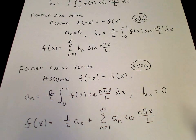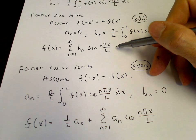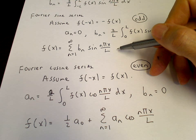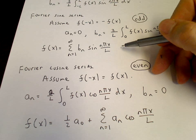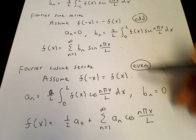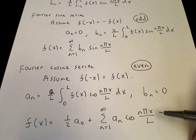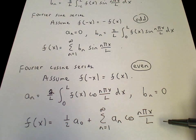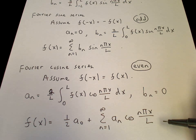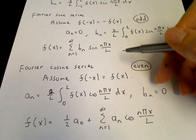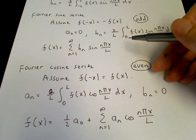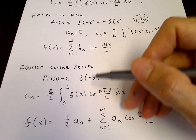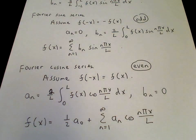So if f(x) is an odd function, we can express it as a Fourier sine series. If f(x) is an even function, we can express it as a Fourier cosine series. And we need to know the value of f only on the interval from 0 to l in order to do these integrals.